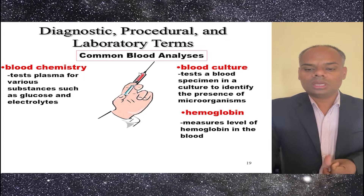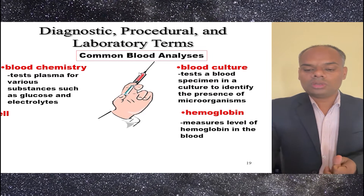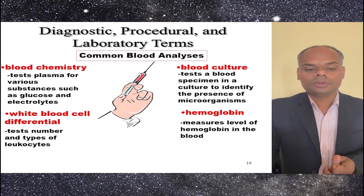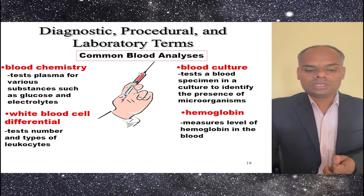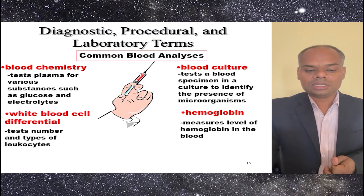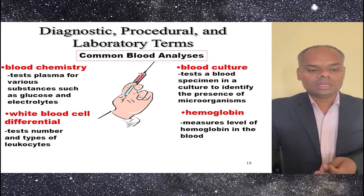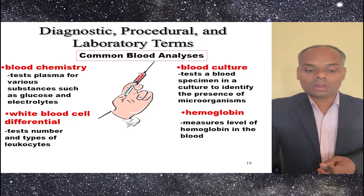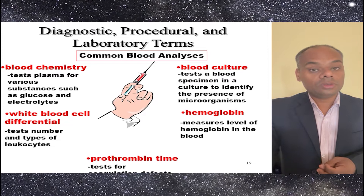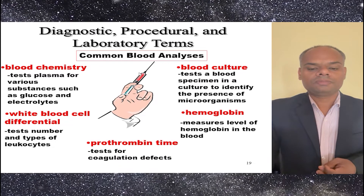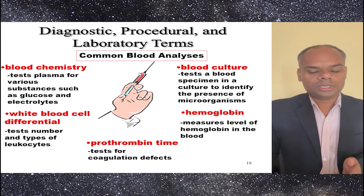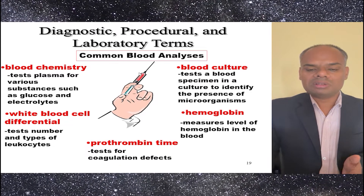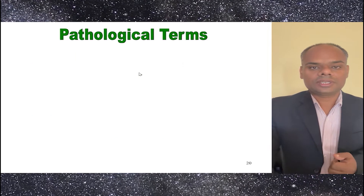Hemoglobin measures the level of hemoglobin in the blood. WBC differential helps in testing the number and types of leukocytes. PT, prothrombin time, tests for coagulation defects.